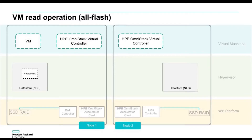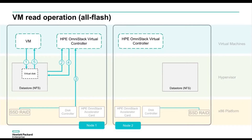Looking at the read path, it's pretty simplistic. We go straight from the virtual controller to the disk controller — the accelerator card isn't part of the read operation because you don't need that heavy lifting. You're not doing deduplication on a read; you're just rehydrating data out of those unique blocks, and the data goes back to the virtual machine. The read path is entirely inside the node where the VM resides — very efficient. Data locality is an important design element of how we built our software stack.